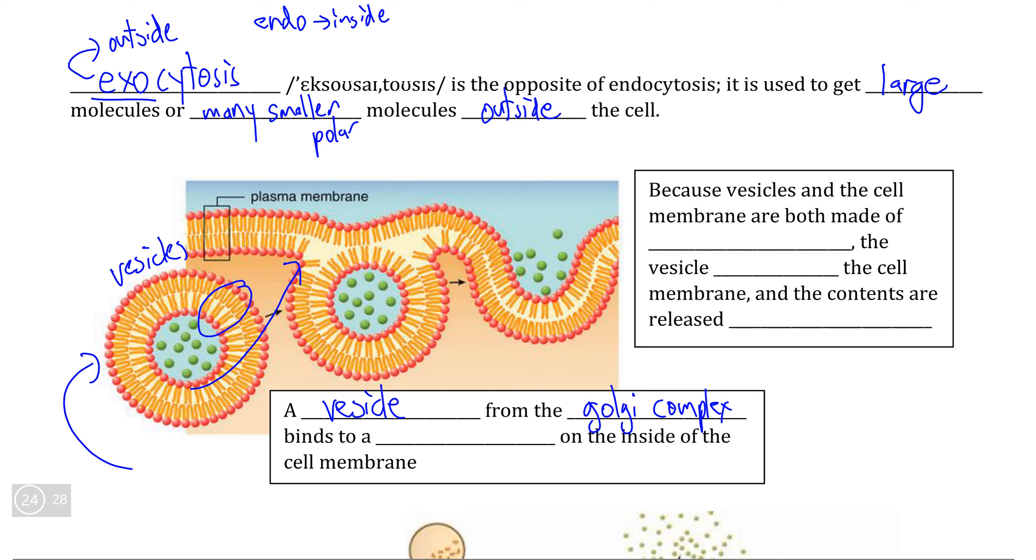Now, this vesicle will have a receptor protein on its surface, which corresponds to another receptor protein that we would this time find on the inside of the cell membrane. And when these two receptor proteins bind together, it triggers the cell membrane that the vesicle is made of to join with the cell membrane on the outside of the cell. And this is able to take place because both vesicles and the outside of the cell membrane are made up predominantly of phospholipids, which means the two phospholipid bilayers can actually join together where the membrane of the vesicle and the cell membrane join together, causing the contents of the vesicle to be released outside of the cell.